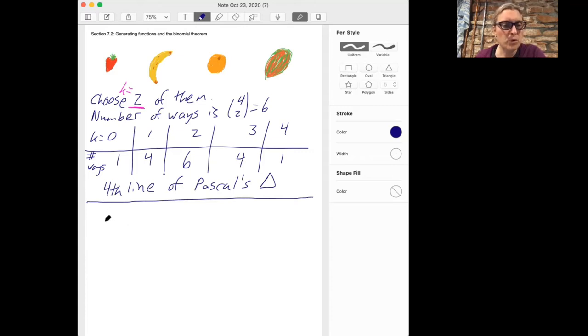So for that, we're going to think about each category. So we have the strawberry category, the banana category, the orange category, and the mango category. And for the strawberry, unfortunately, there's only one of them in the refrigerator.